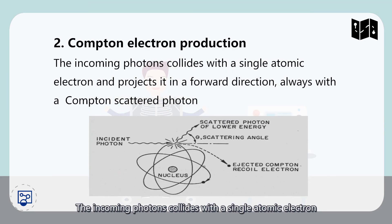The second mode is Compton electron production. The incoming photons collide with a single atomic electron and project it in a forward direction, always with a Compton scattered photon.